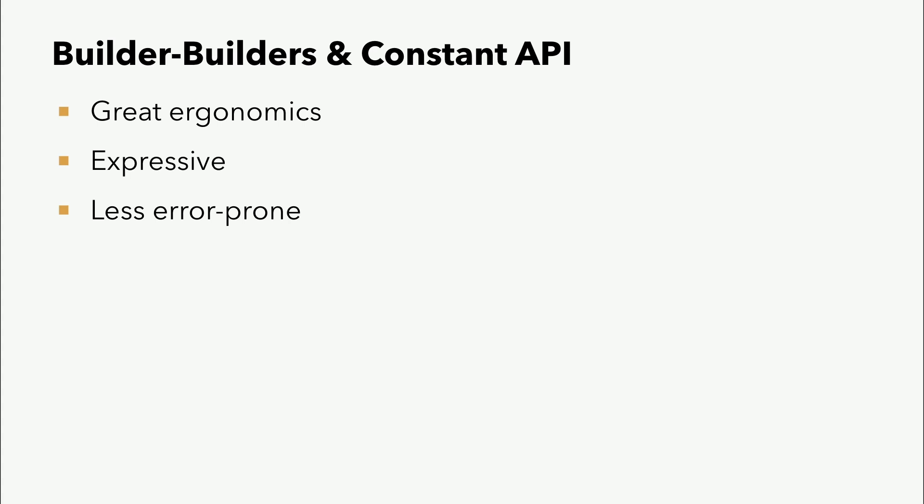Also meiner Meinung nach ist diese Kombination aus dem Builder-Builder und der Konstanten-API ein super Match, weil man hat die Strings entfernt und man hat sehr spezifische Builder, die wiederverwendbar sind. Es ist sehr ausdrucksstark und es ist weniger fehleranfällig, weil ich weiß, dass ich ein ifThenElse implementieren kann mit ifThenElse und nicht mit einem ifEqual und conditionless Jump zum Schluss. Und es ist mehr oder weniger effizient. Also sie haben sich das Ziel gesetzt, gute Performance zu haben, aber nicht Performance alles dominieren zu lassen.